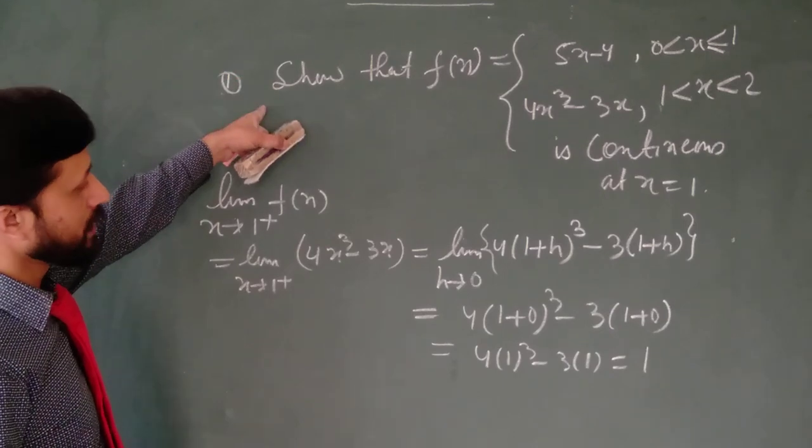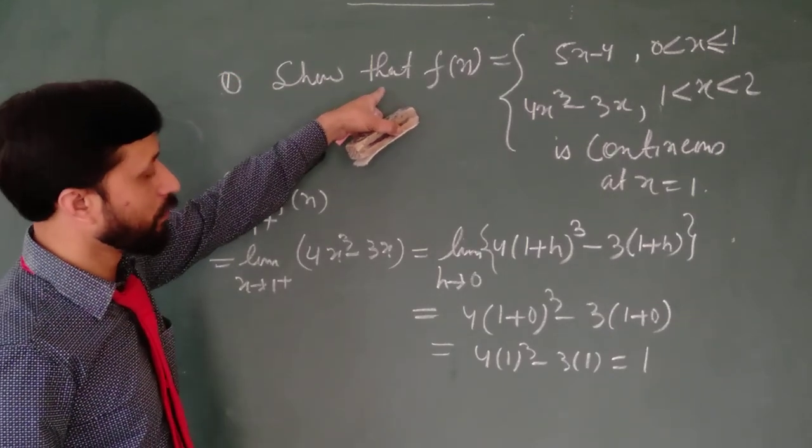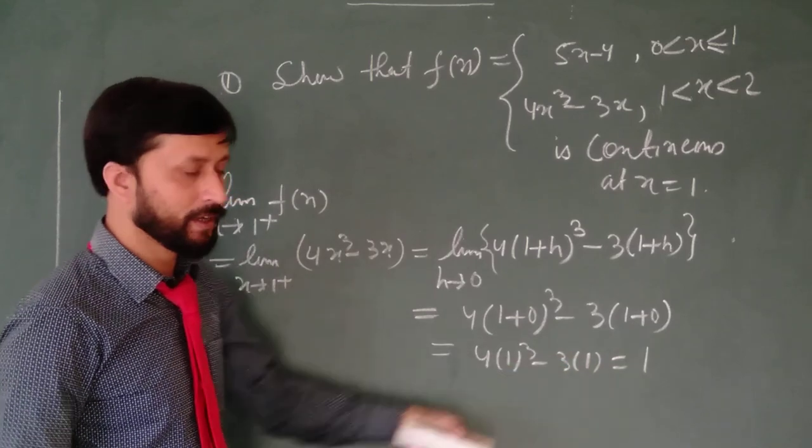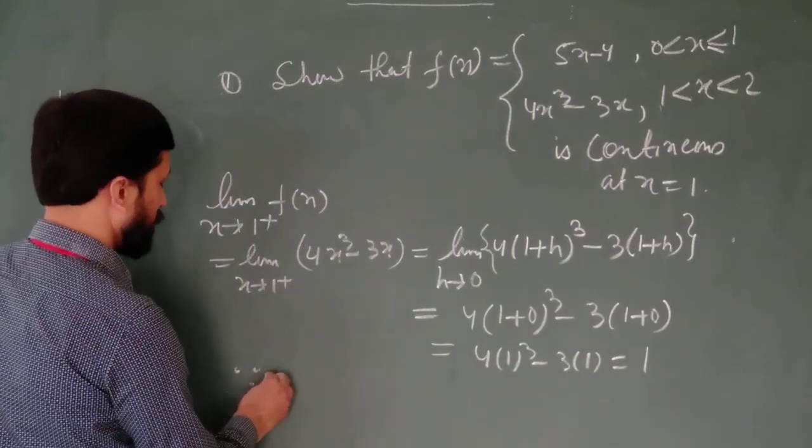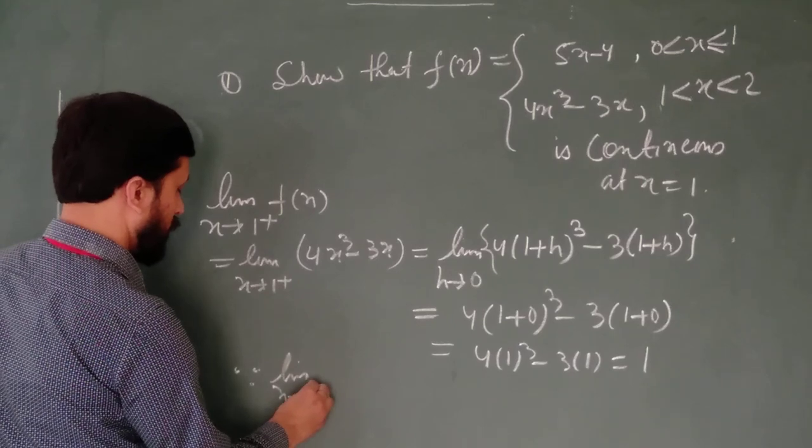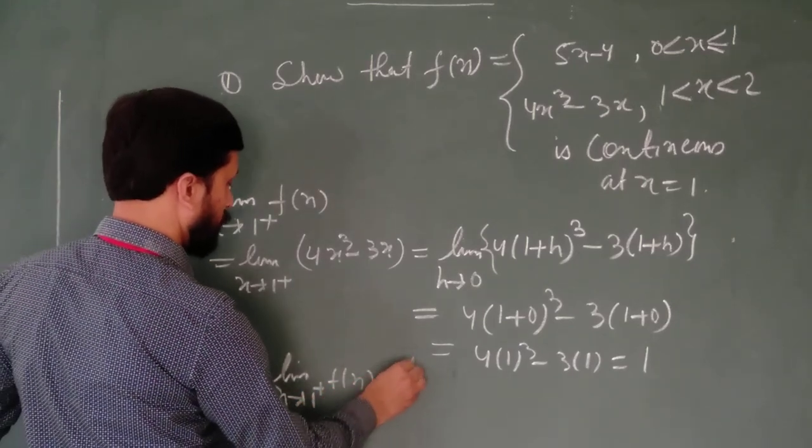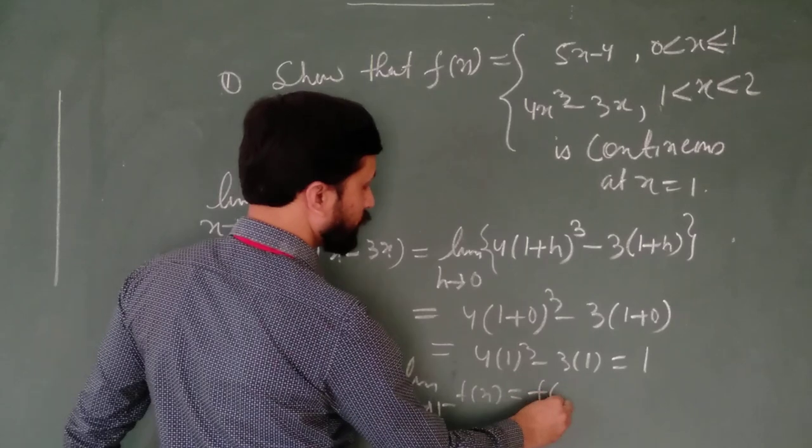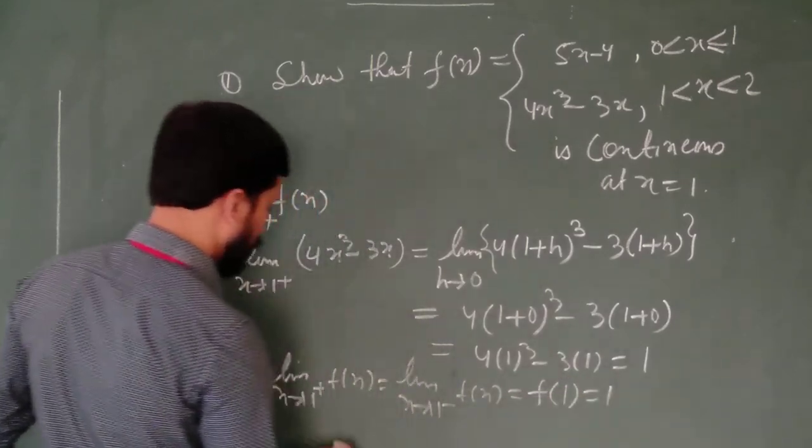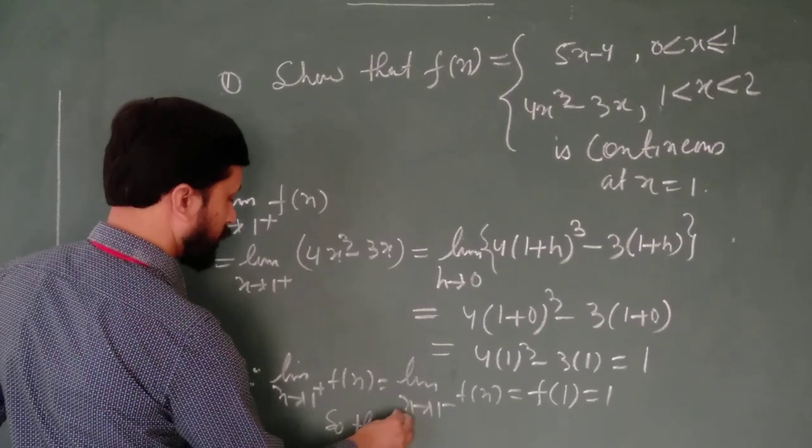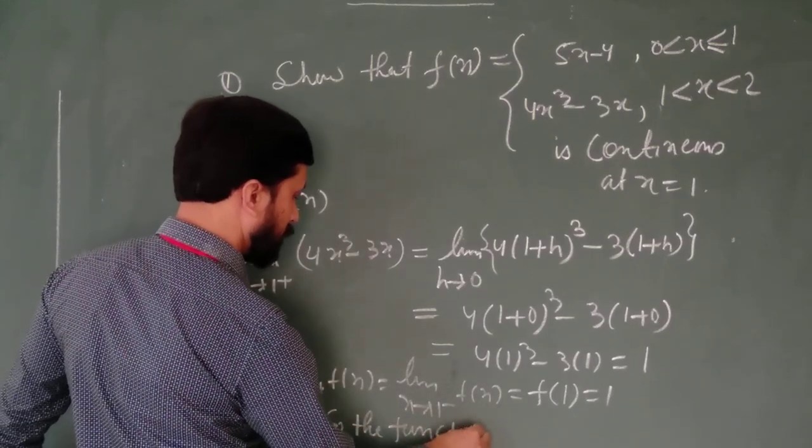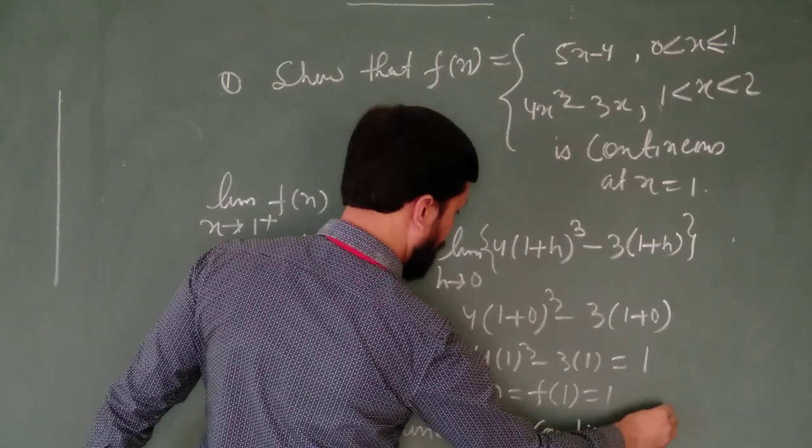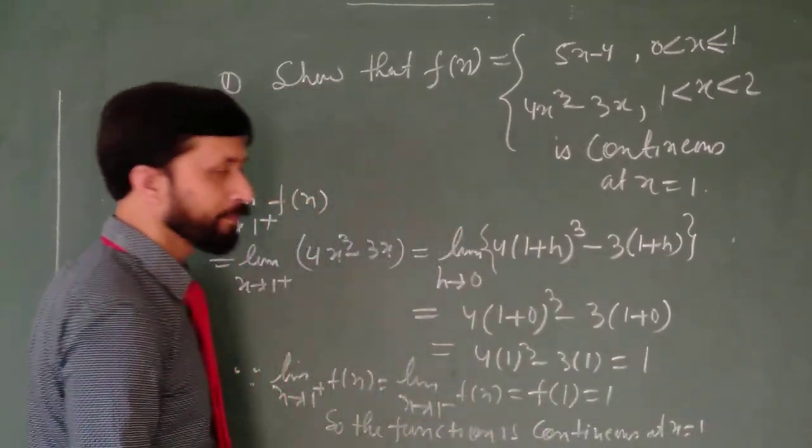Previously, we got functional value f(1) was 1. Left hand limit value was also 1. And here, we are getting right hand limit value also 1. So we can write now. Since limit x tends to 1 plus f(x) equal to limit x tends to 1 minus f(x) equal to f(1) equal to 1. Therefore, the function is continuous at x equal to 1.